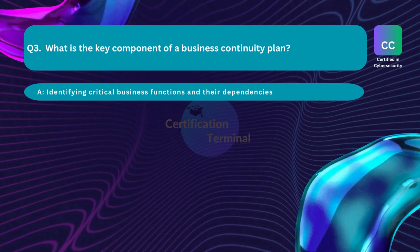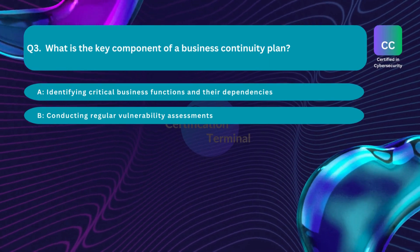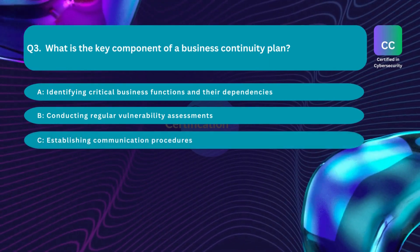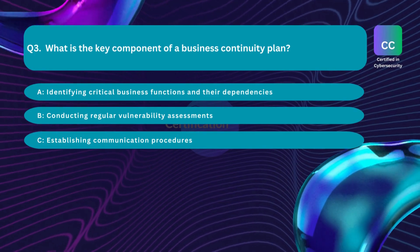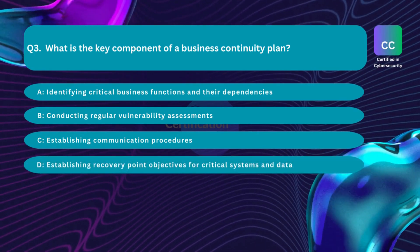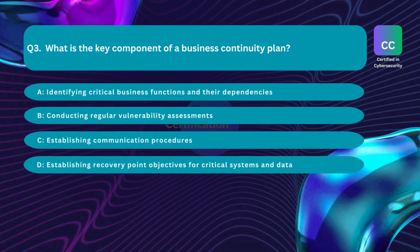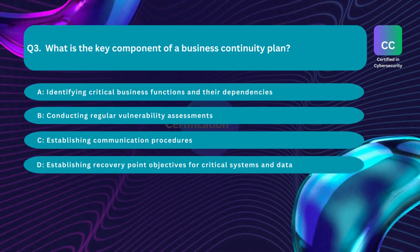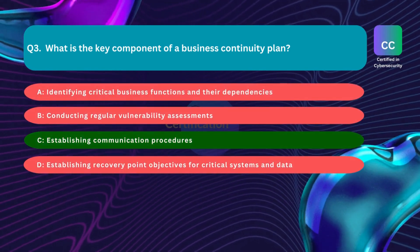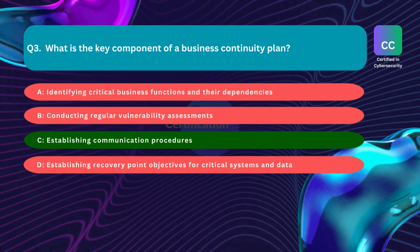Question number three: What is the key component of a business continuity plan? Option A: identifying critical business functions and their dependencies. Option B: conducting regular vulnerability assessments. Option C: establishing communication procedures. Option D: establishing recovery point objectives for critical systems and data.